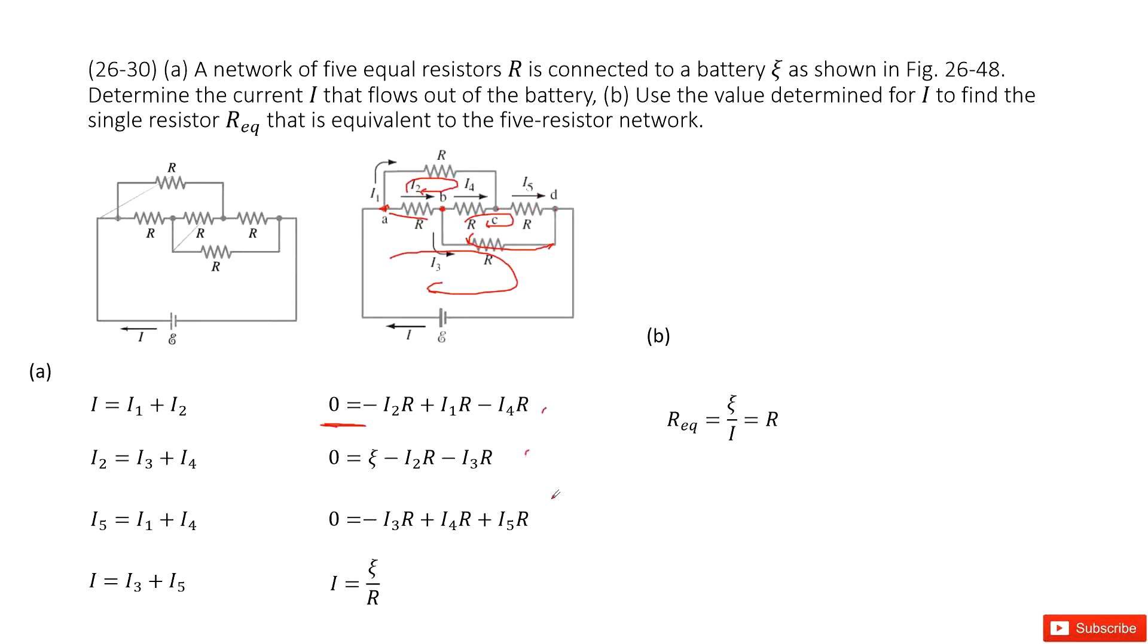Now we get the three equations. And then from these seven equations, you can solve the current I equal to epsilon divided by R.